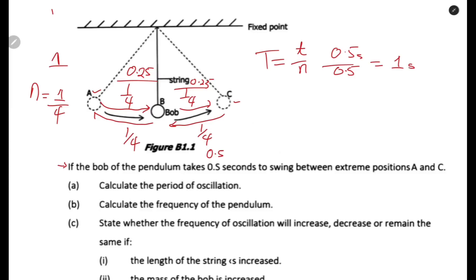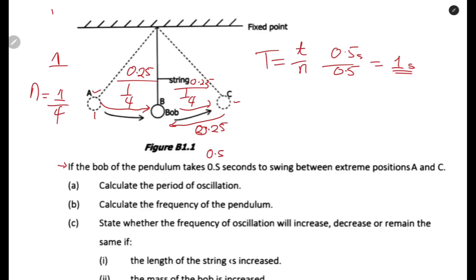For example, if the bob had moved from A to B to C and back to the midpoint B, we would add 0.25 + 0.25 + 0.25 = 0.75 oscillations. That is how you determine the fraction of oscillation completed.